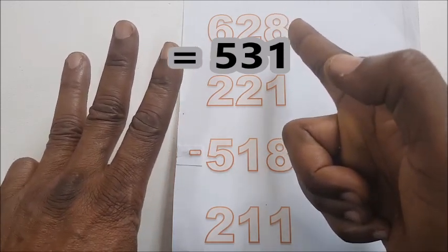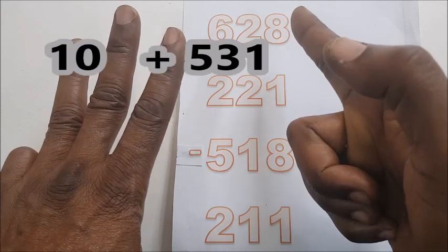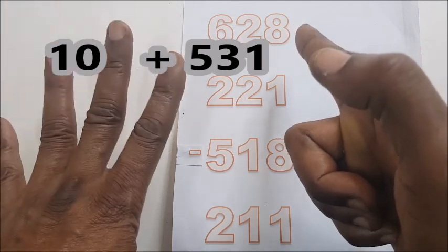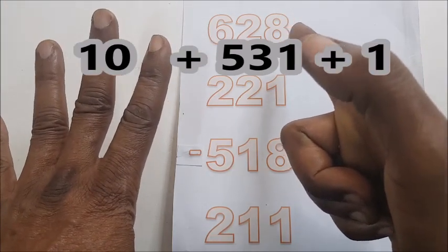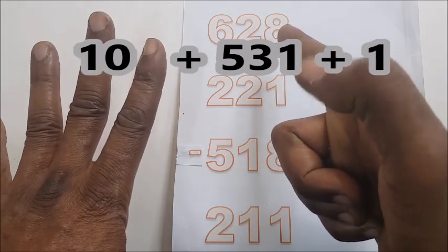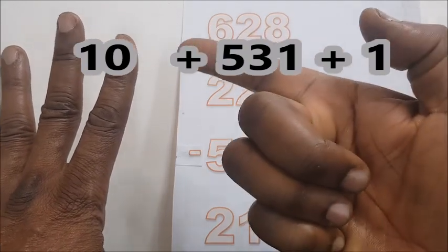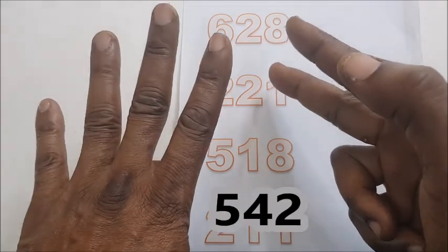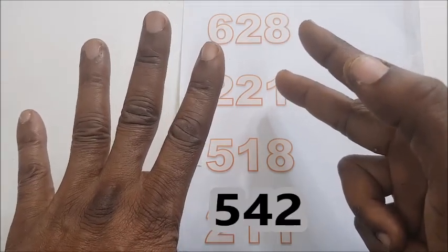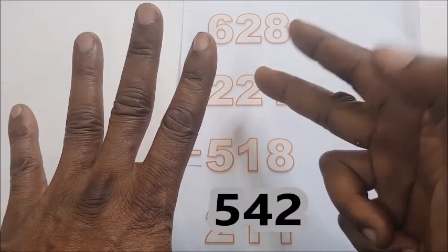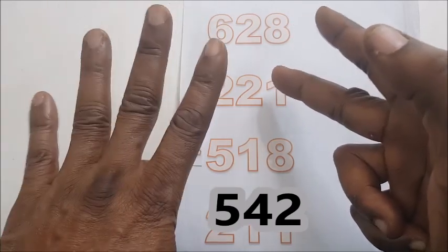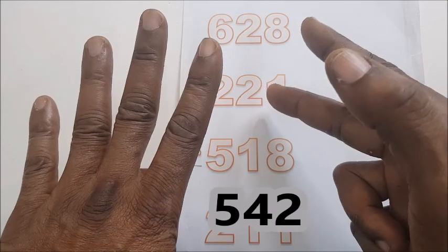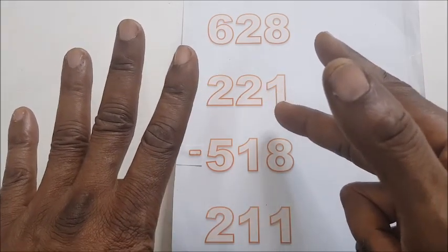So we have five hundred and thirty-one. Plus, plus ten, this is the ten, and here plus one. But I've bent the thumb to tell us five hundred. Plus one, this is plus one. So you can see we have five hundred and forty-two. Five hundred and forty-two.